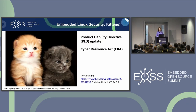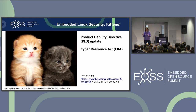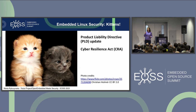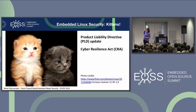And then there are kittens. We should never forget kittens. Those two nice kittens are called: one is called Product Liability Directive, PLD, and the second one is called Cyber Resilience Act, CRA.